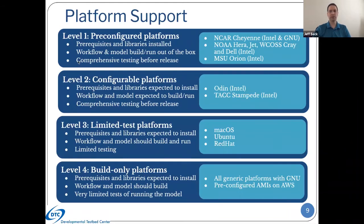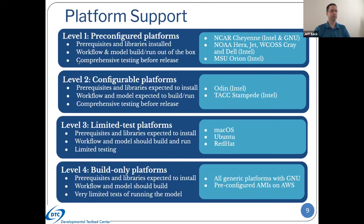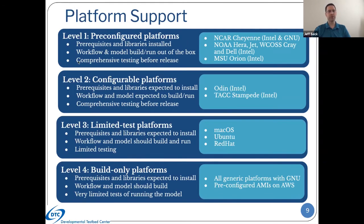Platform support — where can you run this? We've got four different levels of platforms with different amounts of support, similar to the medium-range weather app. Level one — pre-configured platforms — is the highest level of support. These are systems where we've already installed the prerequisites and libraries to run the system end-to-end. We've tested the workflow and the model build, so they will work out of the box without any changes from the user. These include NCAR's Cheyenne machine, NOAA's HPC machines — Hera, WCOSS Cray, Dell — and the new MSU Orion system. We have two separate compiler support systems right now: Intel and GNU. We hope to expand that in the future.